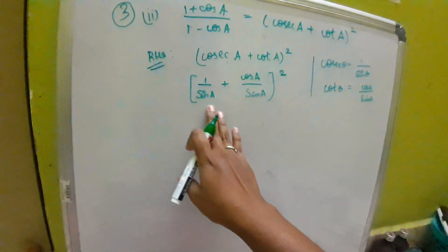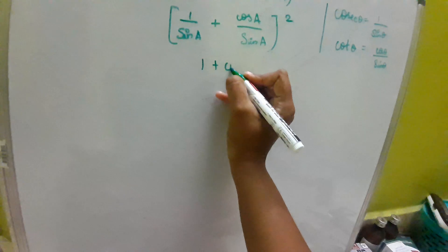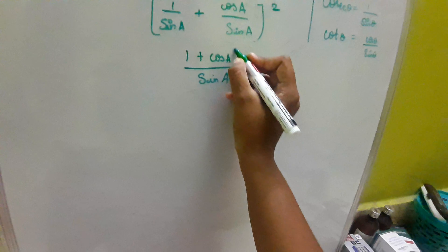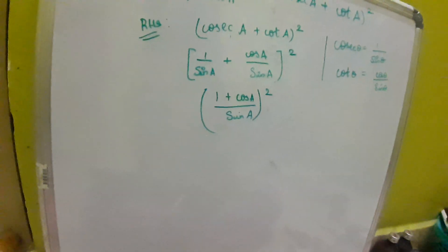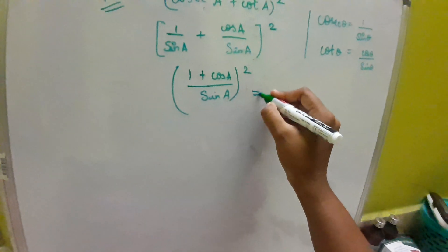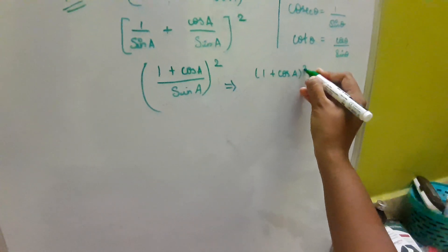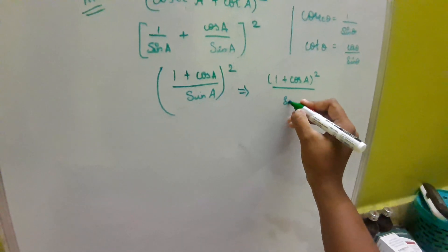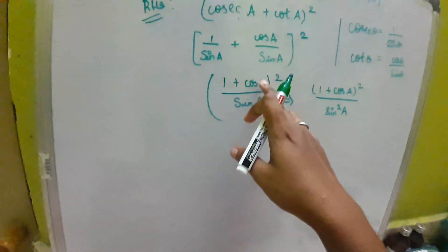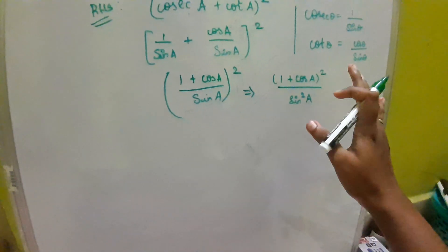Now, solving inside the bracket first — the denominators are the same, so we can write this as 1 plus cos A by sin A, the whole square. Then, taking the square inside, it will be 1 plus cos A the whole square, divided by sin squared A.